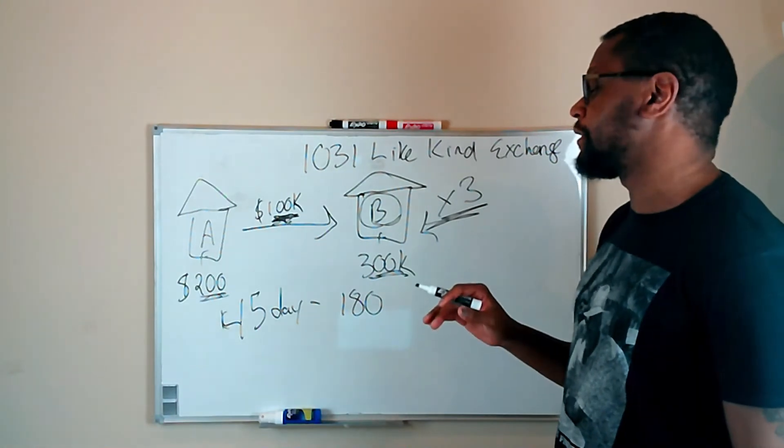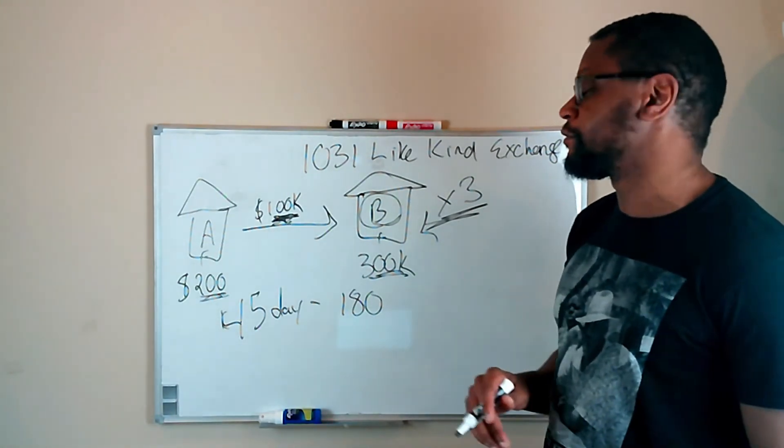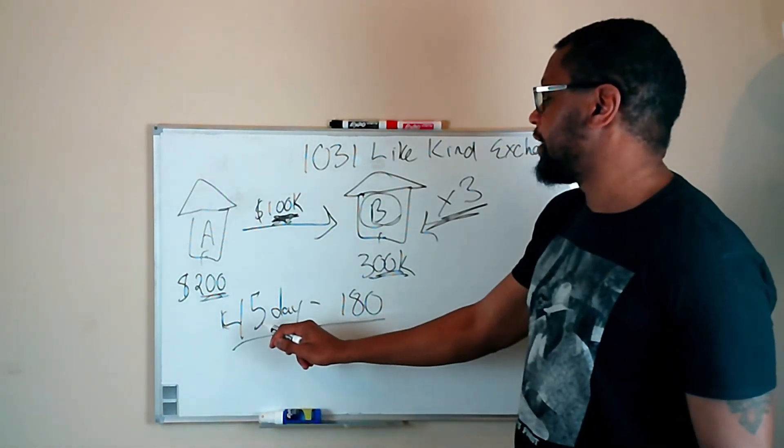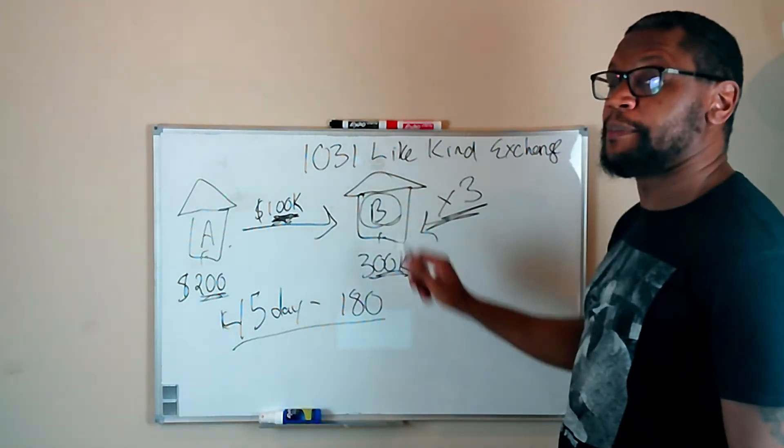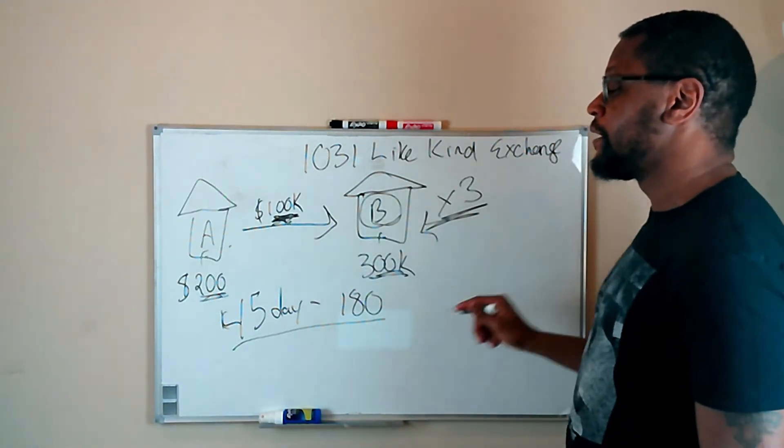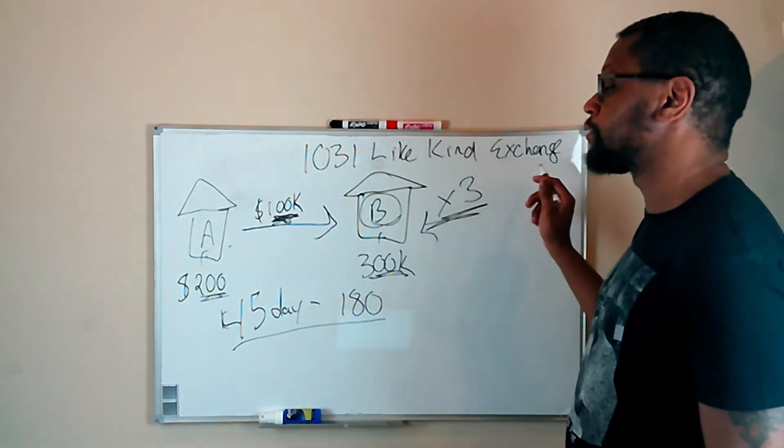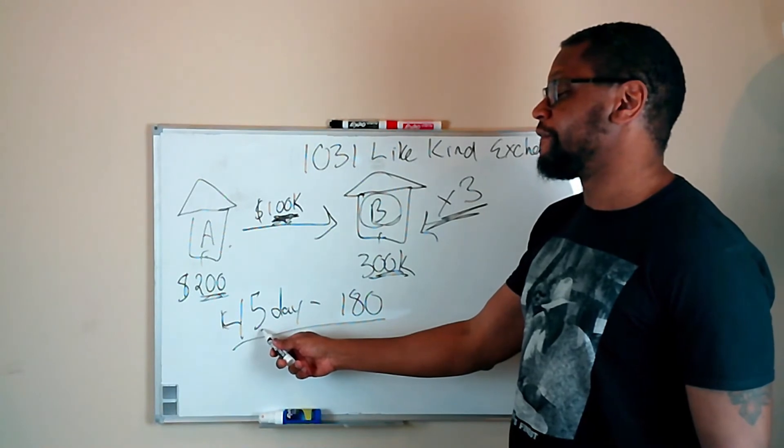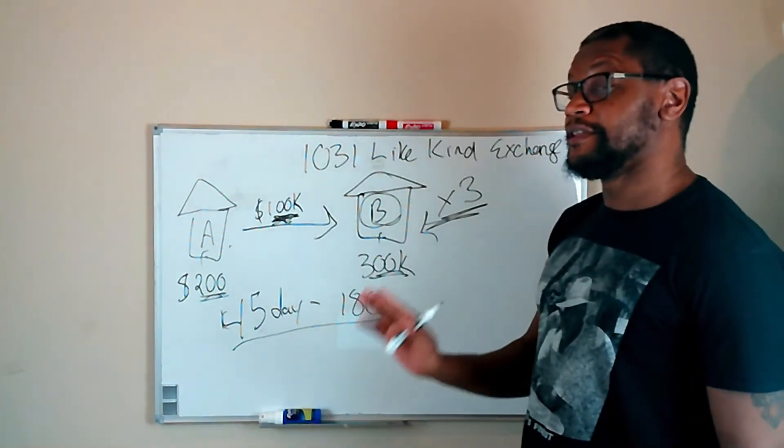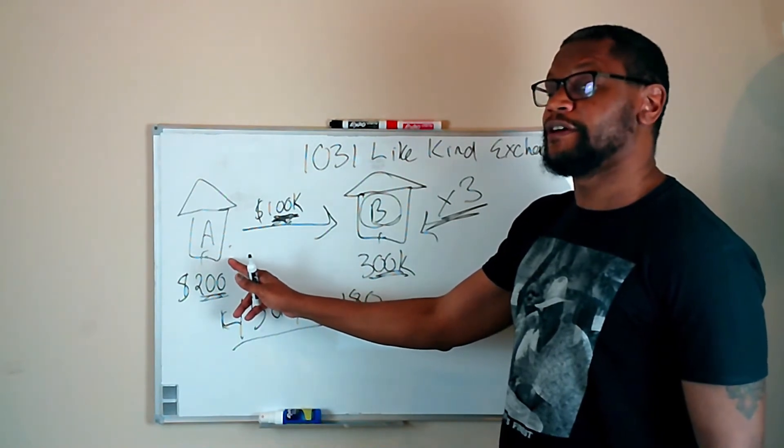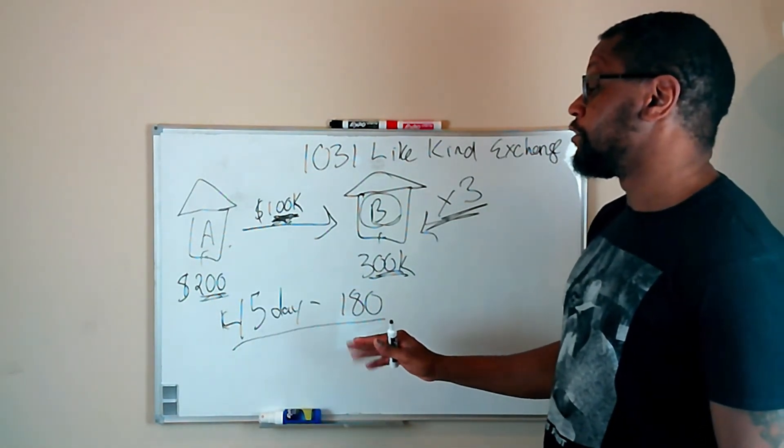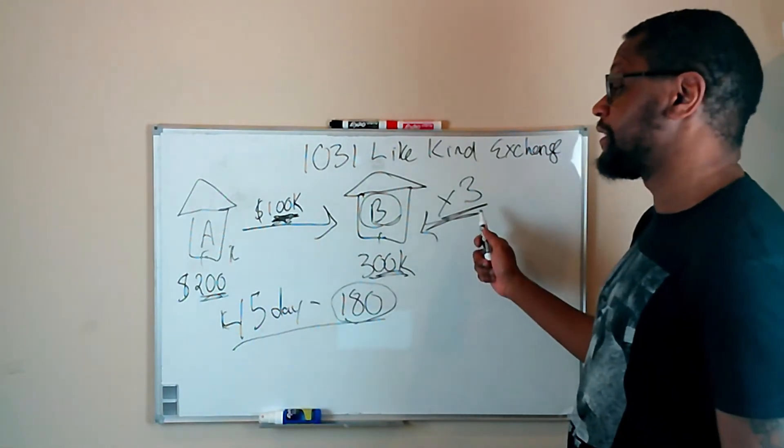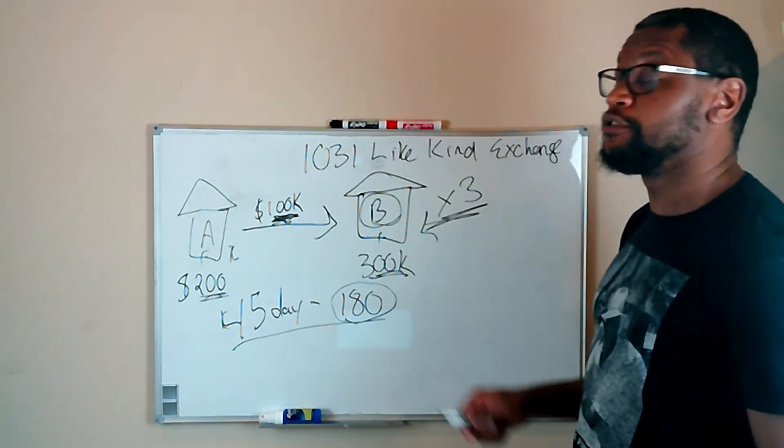Now, mistake number one that I found a lot just looking through open source research on the internet is people mess up this time frame right here. 45 days from the date of closing to identify the properties that you potentially want to buy. Then you have 180 days to actually close on the property. Well, this 180 days is not from the end of this 45 day period. So this is the rule. You have 45 days from the date of closing to identify the property. Then you have 180 days from the date of closing to actually close on the sale with regard to the new property you want to purchase.